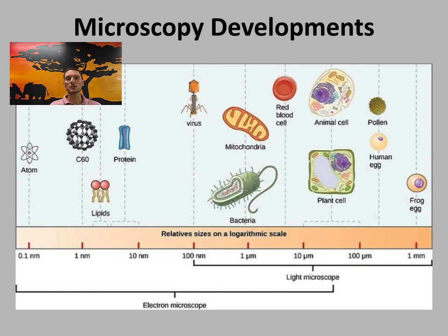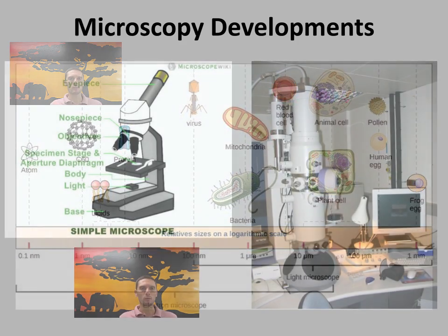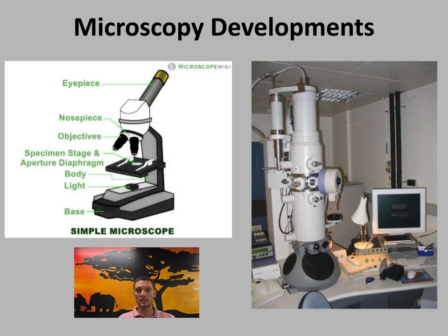The development of microscopes was essential for us to be able to further study cells. With the naked eye, we can see items that are about 0.1 millimeters — things like an individual grain of salt, a piece of rice, a period at the end of a sentence, or 12-point font. To be able to see things at a much smaller level, we need microscopes.